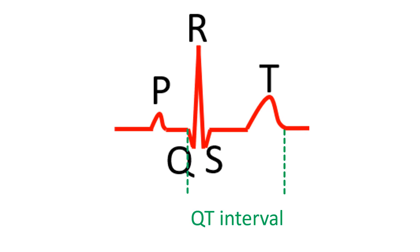Another important interval is the QT interval, measured from the onset of the QRS complex to the end of the T wave. The T wave represents the repolarization of the ventricles — that is, the return of the electrical potential to the baseline after activation during depolarization. Usually the contraction of the ventricles is over by the end of the T wave. Normally the QT interval is roughly less than half of the RR interval. Normal ranges differ for males and females: less than 0.4 seconds for males and less than 0.44 seconds for females, with a general range of 0.34 to 0.43 seconds.